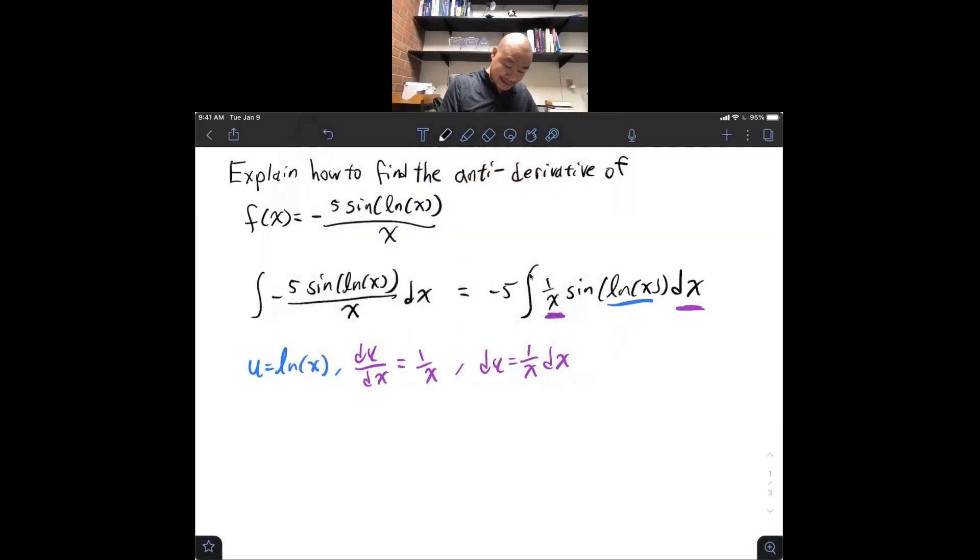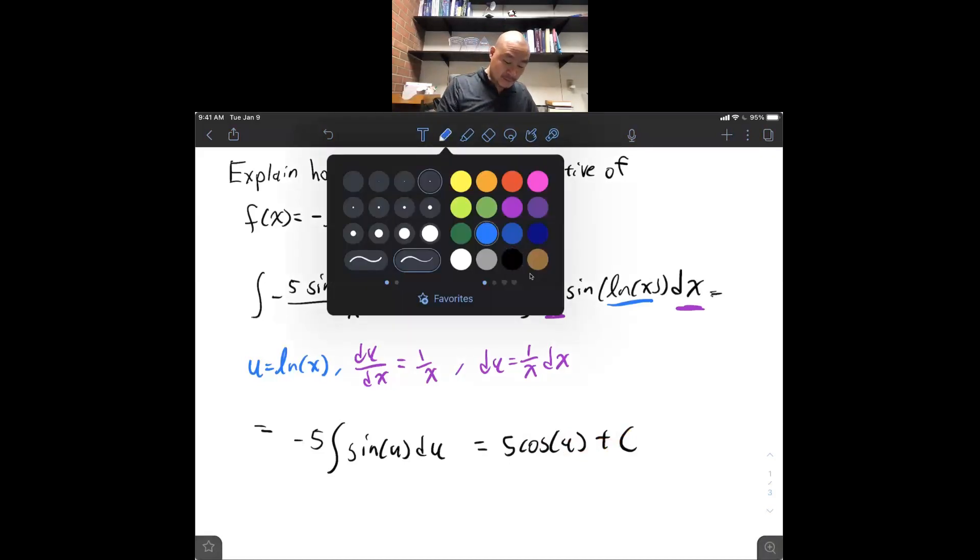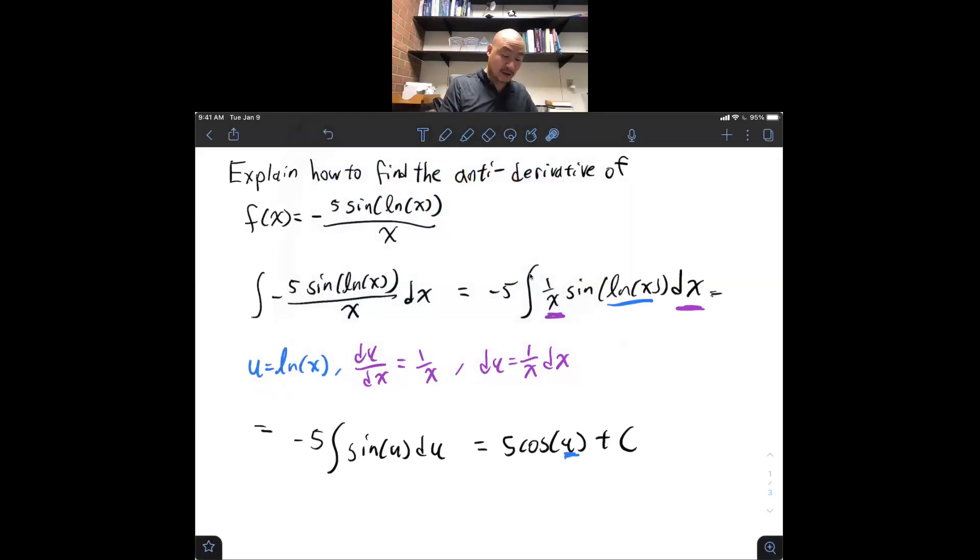So, I can rewrite this original thing to be minus 5 sine of u du, which the anti-derivative of is 5 cosine of u plus c with respect to u. Now, it's worth noting that our original function here was a function of x. Its anti-derivative should likewise be a function of x. And so, once again, note that u is itself log x. So, we can finally rewrite this expression as 5 cosine of log of x plus c.